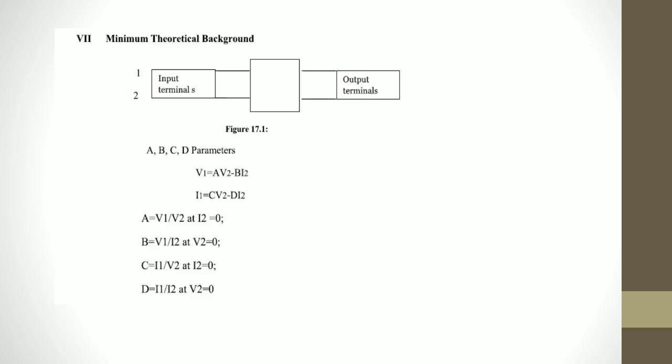Minimum theoretical background. For the A, B, C, D parameter, the diagram is as shown in figure. There are having two input ports and two output ports, named as A, B, C, D parameters.